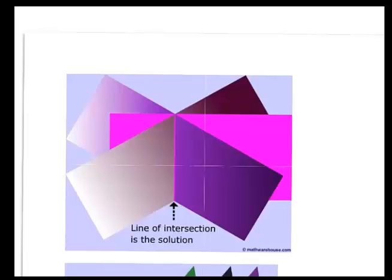So here's a picture of three planes, and they're intersecting. How are they intersecting? They're intersecting at this line right here, right down that middle.